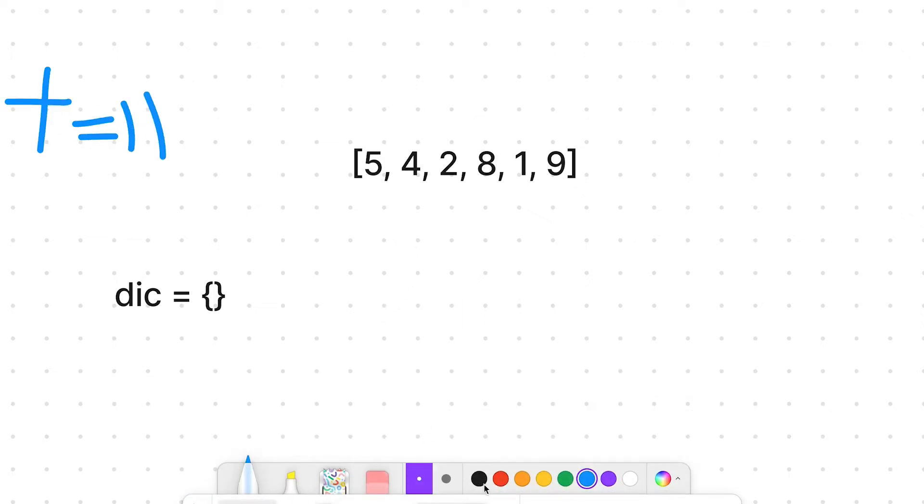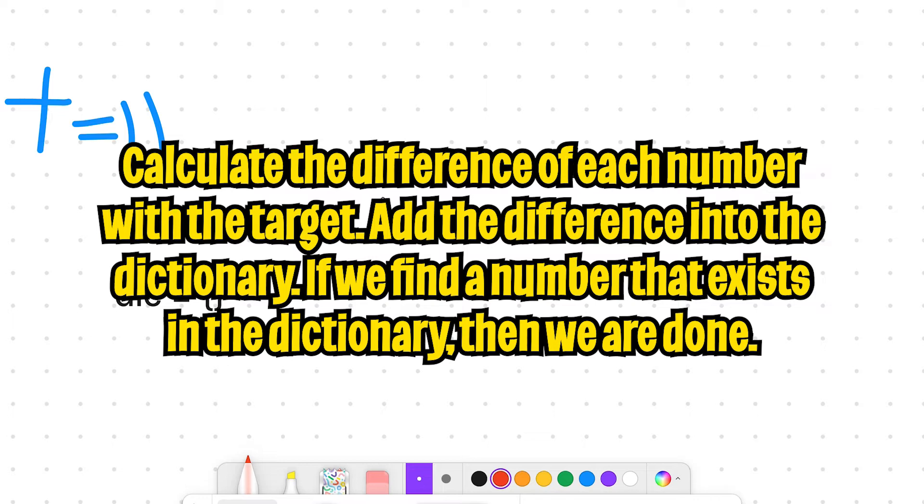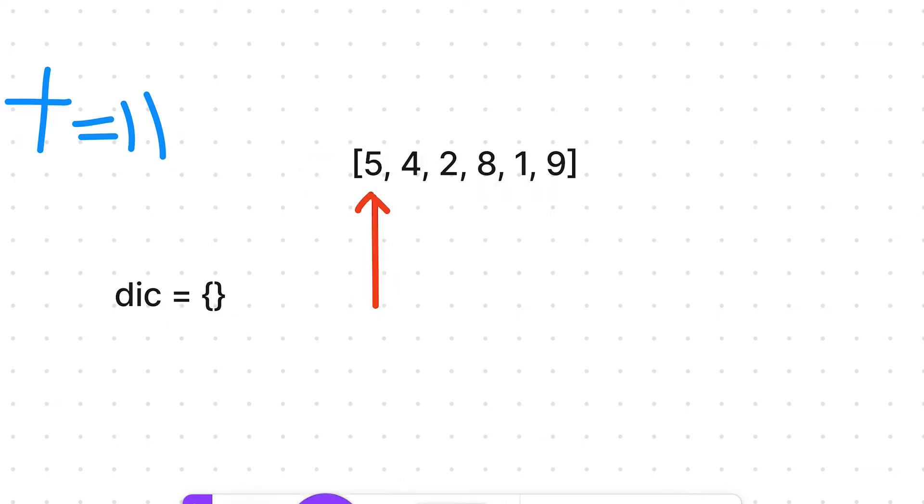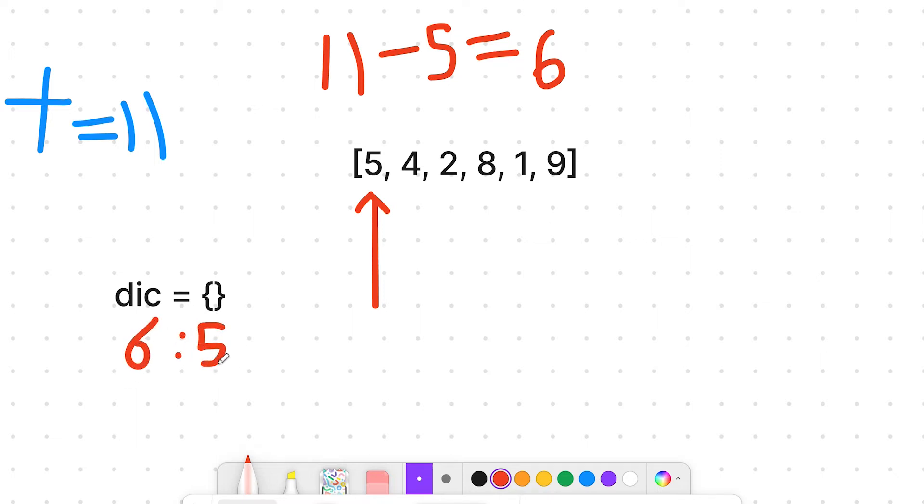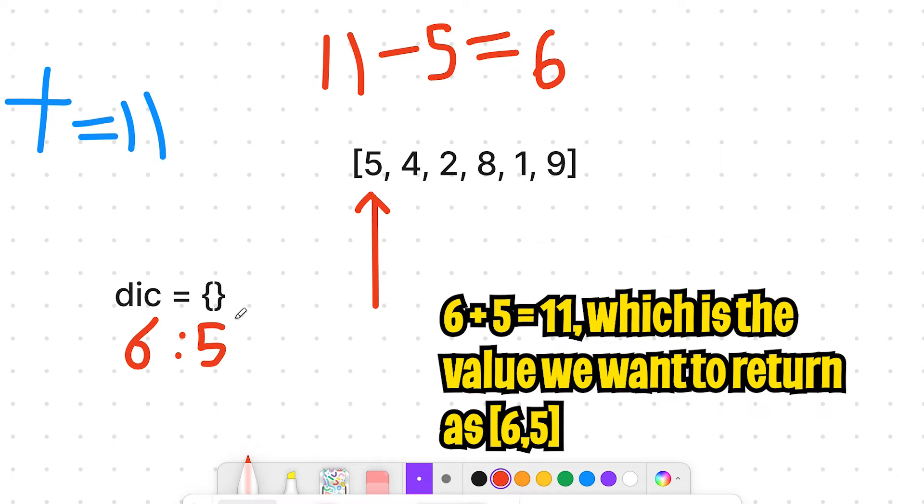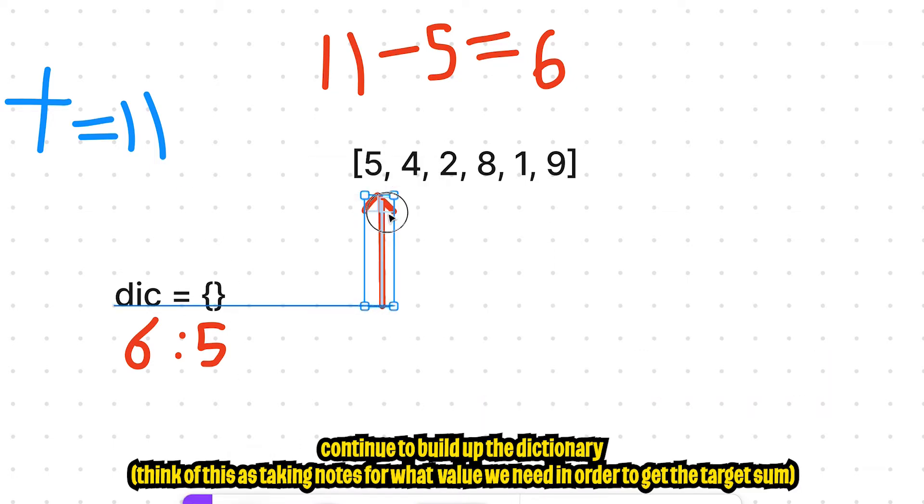So if the target is 11, all we have to do is loop through the list. And for each number, we have to calculate the difference and check whether that value exists in our dictionary. If the value doesn't exist, then all we have to do is just add it to the dictionary. So first we see five. So 11 subtract five will give us six. So in our dictionary, we want to store the difference, which is six, and then we want to store the value five. So that way we know which value subtracted by 11 will give us six. And then we continue.